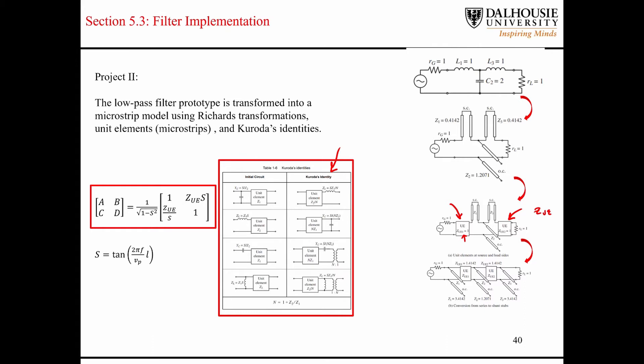So let me just show you a quick example of how this unit element here in combination with this series inductor, which is represented by a series short-circuited transmission line, how it gets transformed into the combination of this stub here and this element here. That's going to be using the first Corotta's identity here.